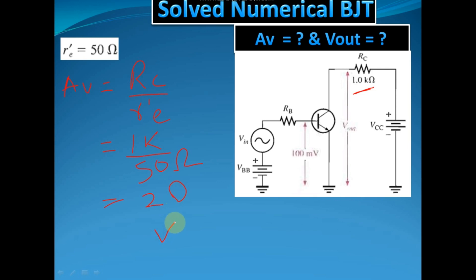You may highlight this. This is your first calculation, that is voltage gain. Let us find the value of Vout. Vout equals to Av into Vin, that is voltage gain multiplied by Vin.